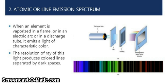Atomic line emission spectrum: when an element is vaporized in a flame, in an electric arc, or in a discharge tube, it emits a light of characteristic color. The resolution of this ray of light produces color lines separated by dark spaces. Look at this picture — you can see the situation.